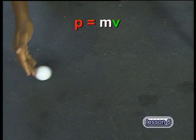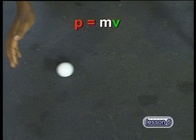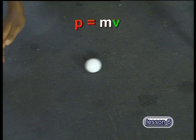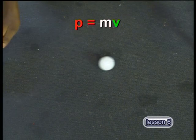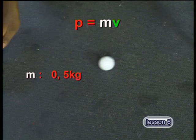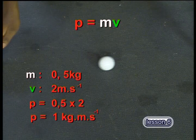Let's start this lesson by thinking about what happens when particles collide. Remember that any particle that is moving has momentum. Momentum is the product of the mass and the velocity of an object. So this ball with a mass of 0.5 kilograms that is moving at 2 meters per second has a momentum of 1 kilogram meter per second.